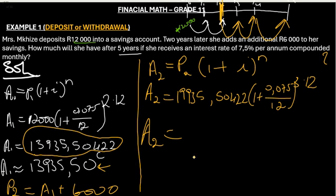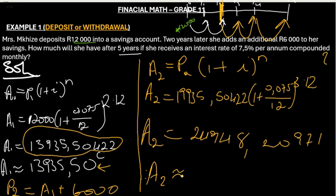Then here I get R24,948.20971. A2 therefore is approximately R24,948.21. So at the end of five years, this means that at the end of five years Mrs. Mckiza had R24,948.21.